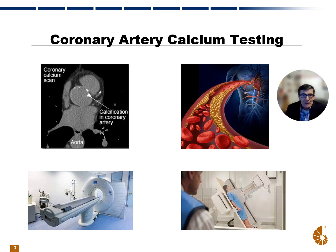For coronary artery calcium testing, at the bottom you can see pictures of the machines that are used to find any calcium that may be in the coronary arteries. In the upper left graphic, you can see that the really dense white material is calcification in a coronary artery. That's what this test is looking for — how much of that dense white material is within a coronary artery.